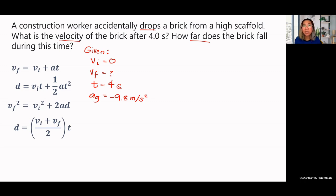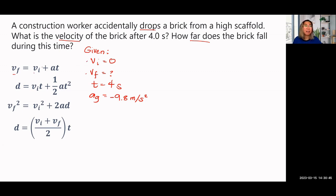Given the list of variables — VI, VF, T, and AG — we now choose among the four equations which is the best to use. We have to make sure that all variables listed can be found in that equation. For the first equation, VF equals VI plus AT: VF is the unknown, VI is given, acceleration is given, and T is given. So we can immediately use the first equation. We cannot use the second, third, or fourth equations because those require the distance D, which was not given in the problem.